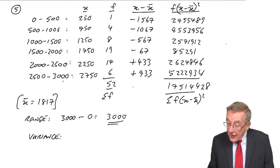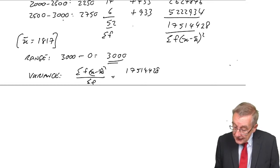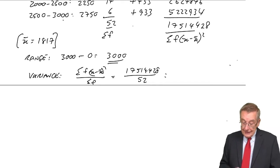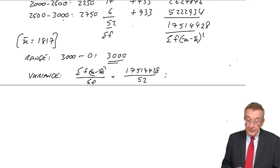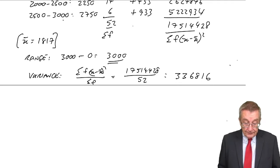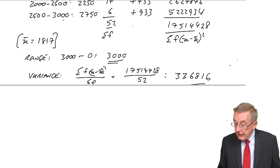And so to get the average, the variance, just like before, sigma f times x minus x-bar squared over sigma f: 17,514,428 over 52 comes to 336,816. So there is the variance.